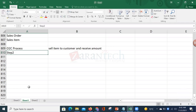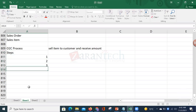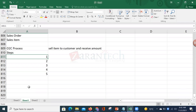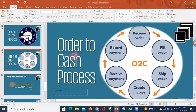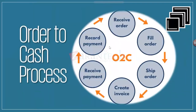But within that simple definition, if we go step by step, there are multiple steps. Let me show you a diagram of the O2C process. In the O2C process, you first receive an order — meaning a customer approaches you and says they need a cell phone, for example an iPhone.